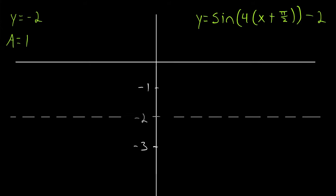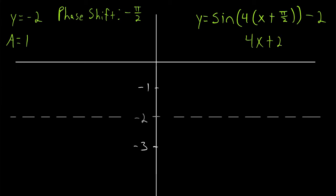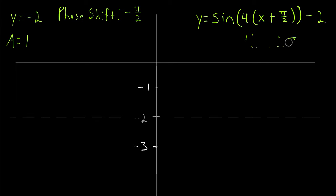Now we find the phase shift. Since x has a coefficient of 1 and the 4 has been factored out, we can immediately see the phase shift is negative pi over 2. If the 4 were not factored out — giving us 4x plus 2 pi — we would either set that equal to 0 and solve for x, or factor out the 4, which gives us the same result and lets us immediately pick out the phase shift.